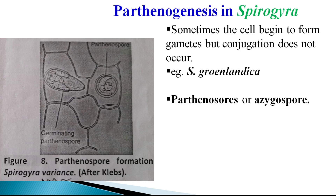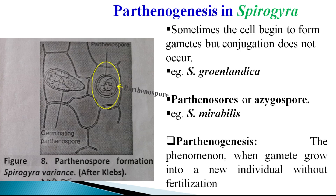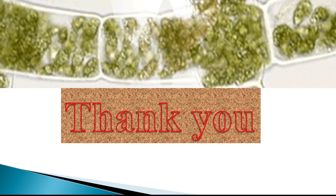Such Parthenospores, also called azygospores, germinate under favorable conditions and give rise to a new filament. Parthenospores have also been recorded in certain species like Spirogyra mirabilis with the preliminaries of conjugation. This phenomenon, in which gametes grow into a new individual without fertilization, is generally referred to as Parthenogenesis. This terminology is strictly associated with the azygospore.